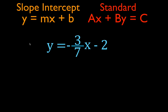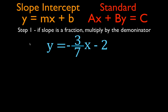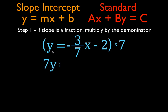There are a couple of ways you can start. Step 1: if the slope — m in the slope-intercept form, the number in front of the x — is a fraction, multiply by the denominator. In this case the slope is minus 3/7ths, so we multiply the whole equation by the denominator, which is 7. Distributing 7 through all three terms: 7 times y is 7y; minus 3/7ths x times 7, the sevens cancel and you're left with minus 3x; minus 2 times 7 is minus 14. That is step one — we multiplied by the denominator and got rid of the fraction.